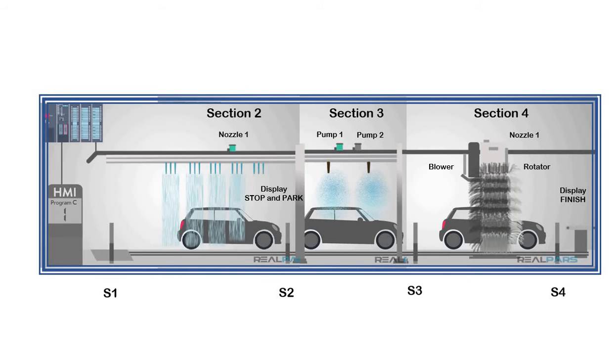These are the next sections in the car wash process, where in section 2 water is sprayed at the car, whereas in section 3 pump 1 and pump 2 are triggered based on the selected program, while in section 4 scrubbing, washing and blowing functions are based on the program selected.